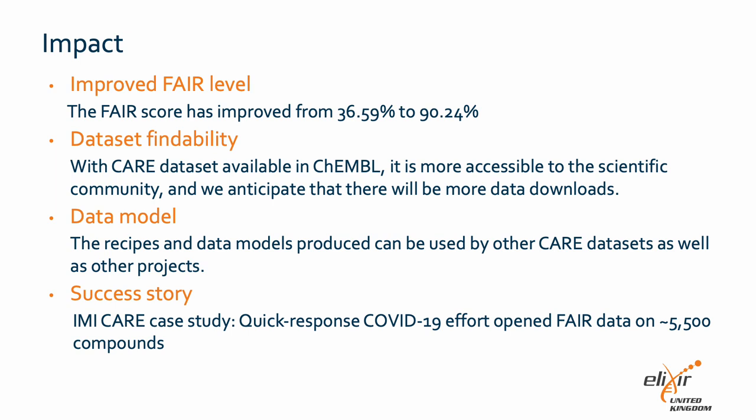To summarize the impact of this work: after this work, the FAIR score has improved from 37% to over 90%. With the CARE dataset available in ChEMBL, it is more accessible to the scientific community, and we anticipate that there will be more data downloads. Depending on ChEMBL's structure, it will be possible to track the dataset download and reuse status. The recipe and data models produced can be used by other CARE datasets as well as other projects. A success story was written and published as well.